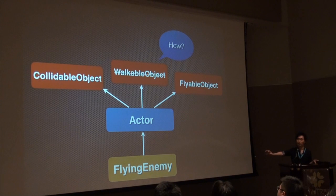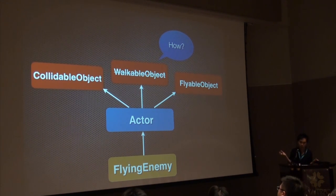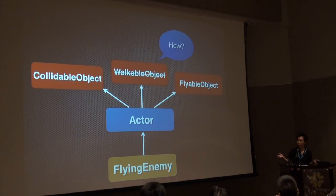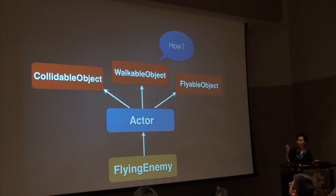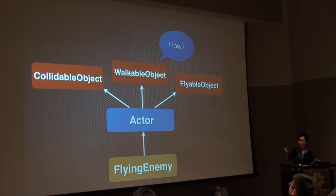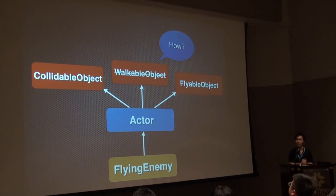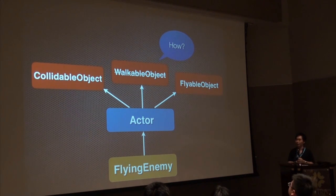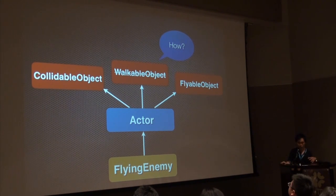到這邊為止其實也沒什麼問題，但是問題來了，就是當你想要製造出一種敵人，他只能飛行不能行走的時候怎麼辦？如果今天有一個Flying Enemy，你要定義他只能夠飛行，不能行走，怎麼做？如果你用繼承體系，你會發現卡住了，你可能要設一些奇怪的Flag然後設一些奇怪的條件，去提醒自己或其他的partner說不要去對這個Flying Enemy做行走的這個動作。